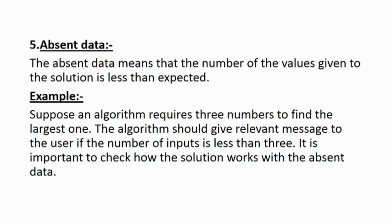The fifth type is absent data. Absent data means that the number of values given to the solution is less than expected. For example, if an algorithm requires three numbers to find the largest one, the algorithm should give a relevant message to the user if the number of inputs is less than 3. It is important to check how the solution works with absent data.